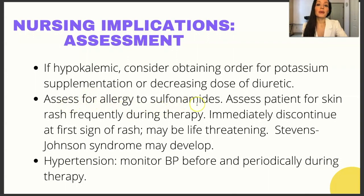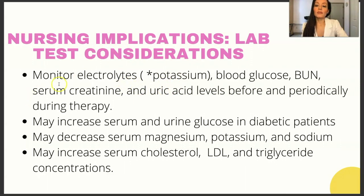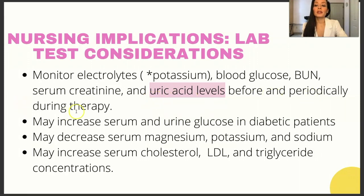Always assess for allergy to sulfonamides or sulfa. Assess the patient for skin rash frequently during therapy and immediately discontinue at the first sign of a rash, as Stevens-Johnson syndrome may develop. If the patient is taking the medication for hypertension, monitor blood pressure before and periodically during therapy. Lab test considerations: monitor electrolytes — specifically potassium — blood glucose, BUN, serum creatinine, and uric acid levels. Elevated uric acid can signal a gout exacerbation. HCTZ may increase serum and urine glucose in diabetic patients, may decrease serum magnesium, potassium, and sodium, and may increase cholesterol, LDL, and triglyceride concentrations.